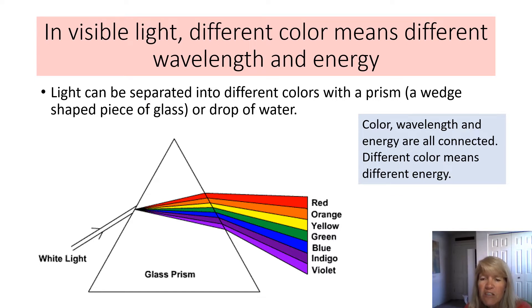And the important thing to know about this is that color indicates energy. So color, wavelength and energy are all connected and the red has the lower energy, the violet has the higher energy, but when you see a color it indicates a particular energy.